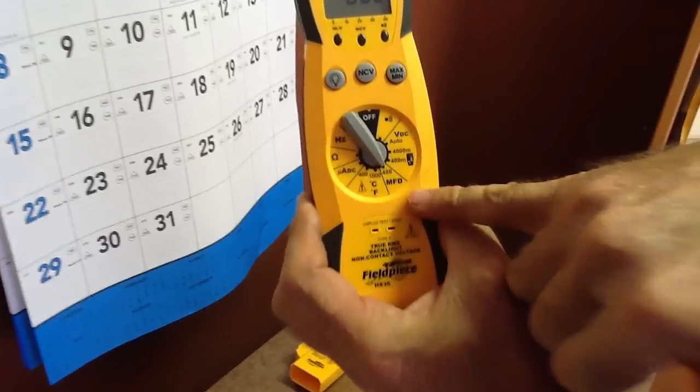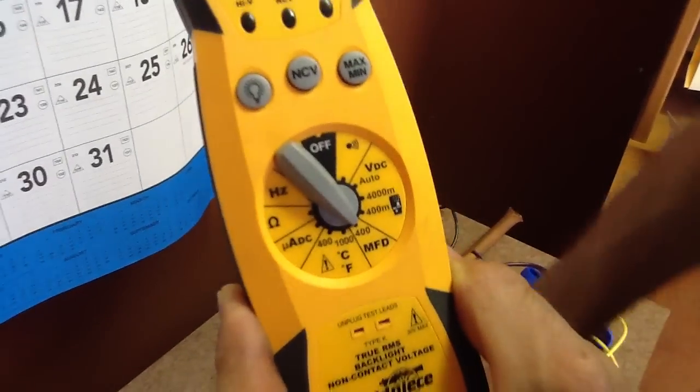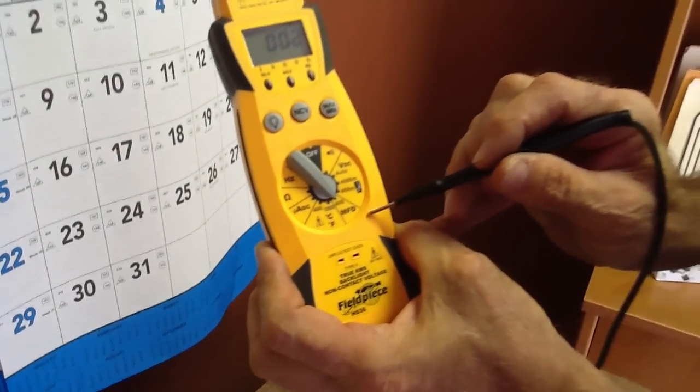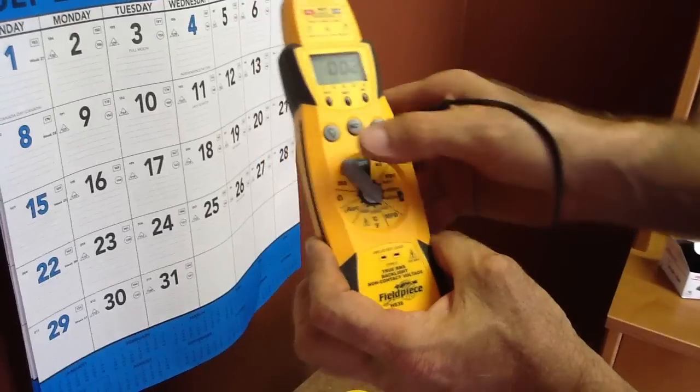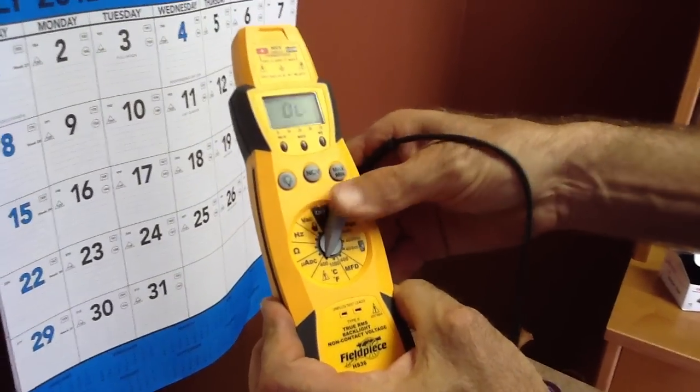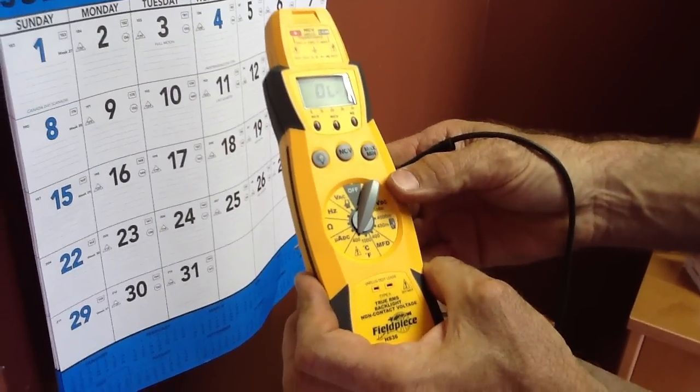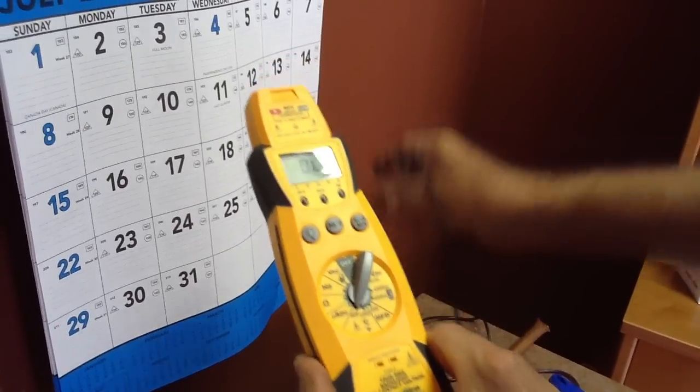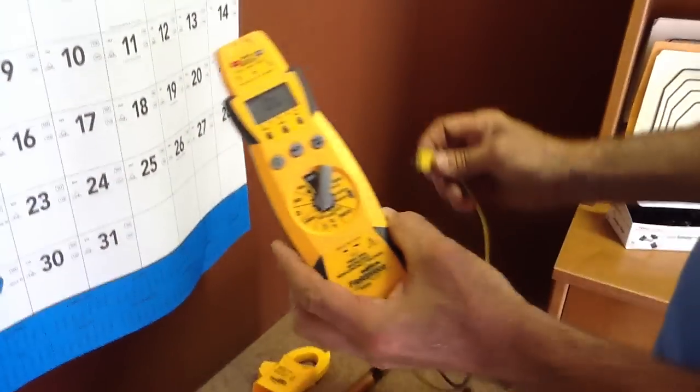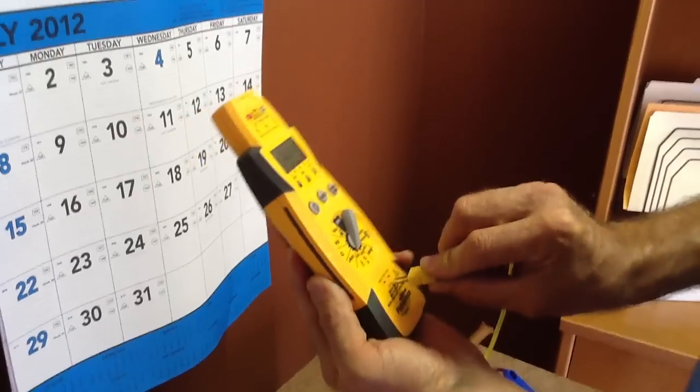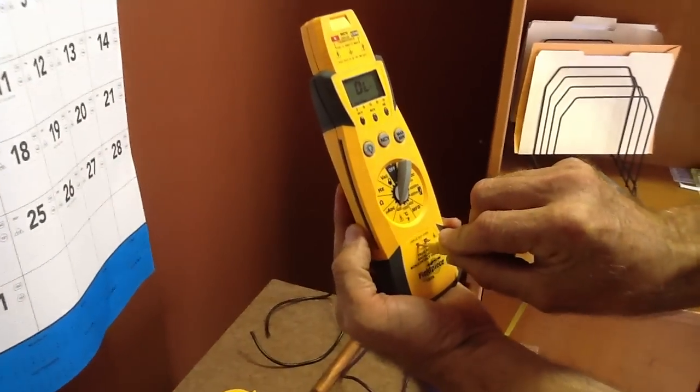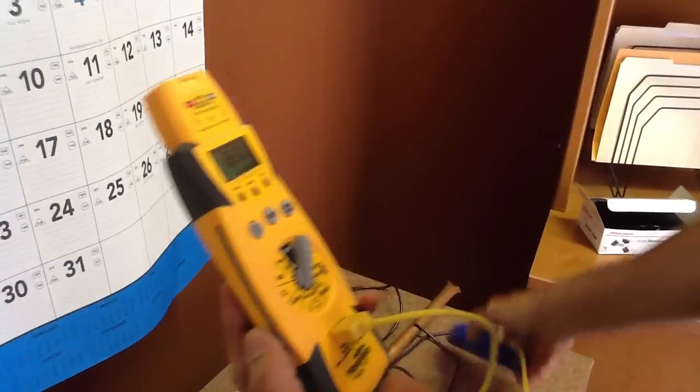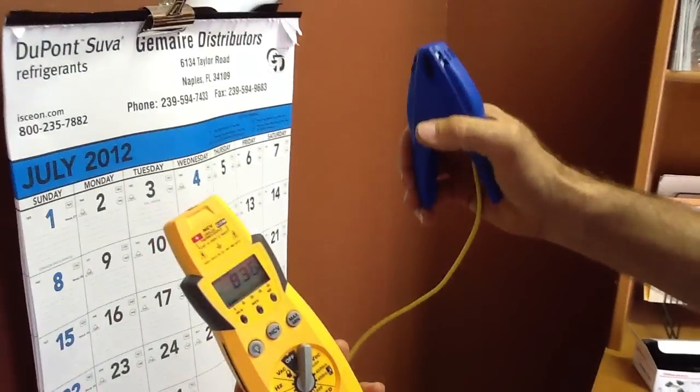Microfarads MFD, you check your capacitors with that, anywhere from 5 to 80 microfarads. It goes up to 400. Temperature probe, you have 400 degrees to a thousand degrees. Okay, so I'm going to put it on 400 for now. You take your temperature probe, you're going to plug it in right here.